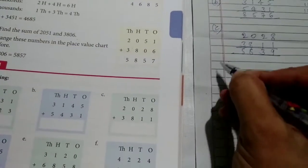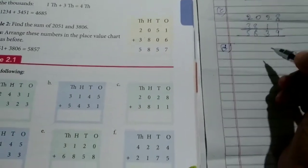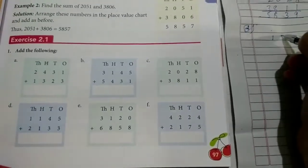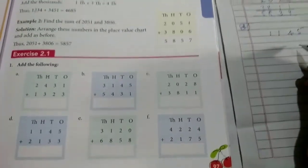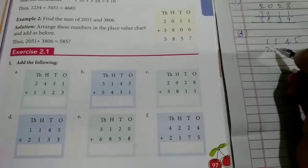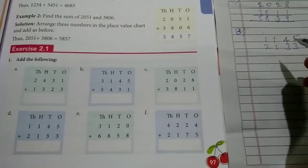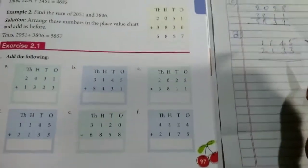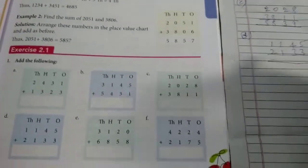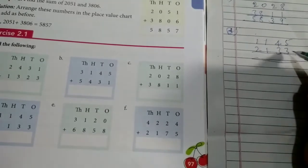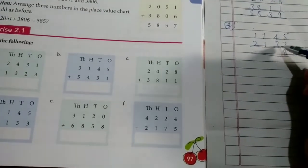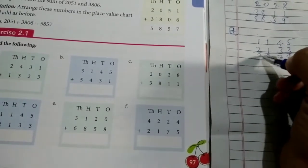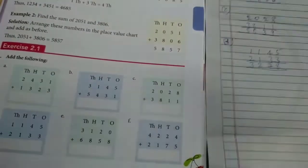So what is next question? Question number D. 1,145 plus 5,213. 5 plus 3, 8. 4 plus 3, 7. 1 plus 1, 2. 1 plus 2, 3.